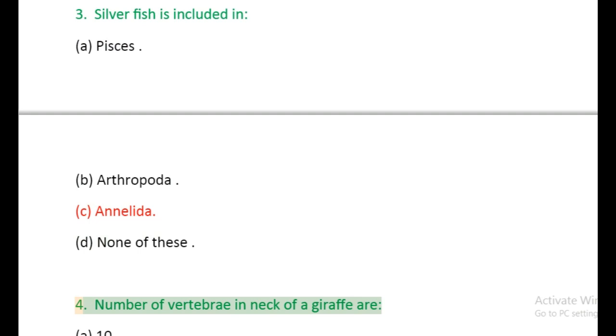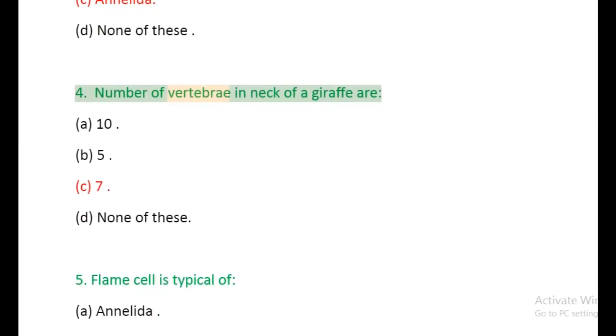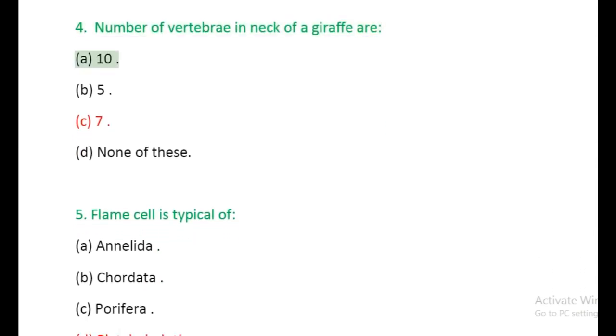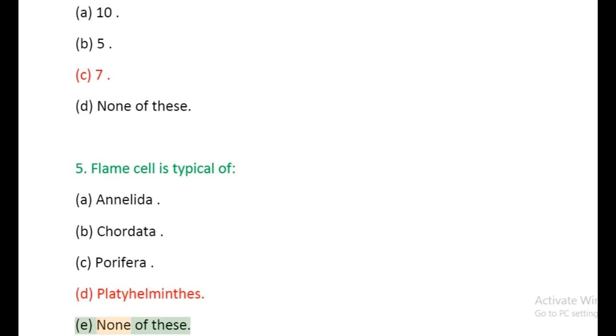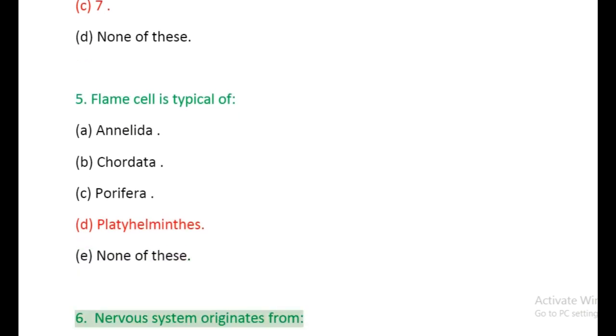Question 4: Number of vertebrae in neck of a giraffe are: (a) 10, (b) 5, (c) 7, (d) None of these. Question 5: Flame cell is typical of: (a) Annelida, (b) Chordata, (c) Porifera, (d) Platyhelminthes, (e) None of these.